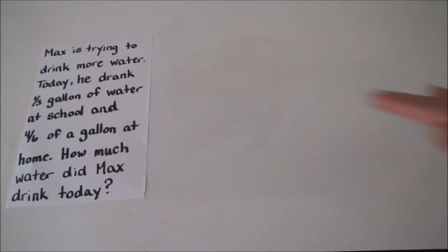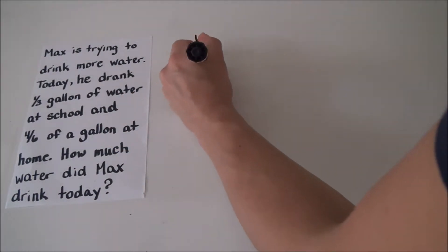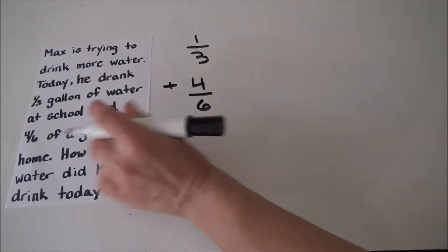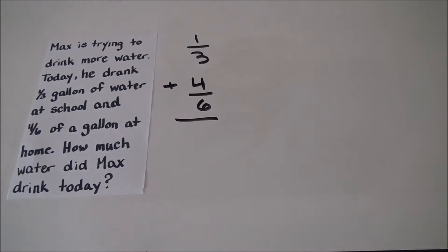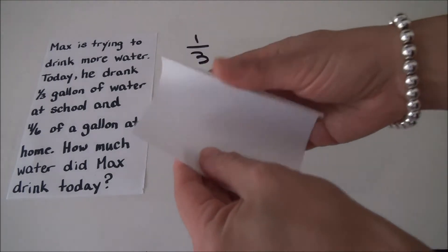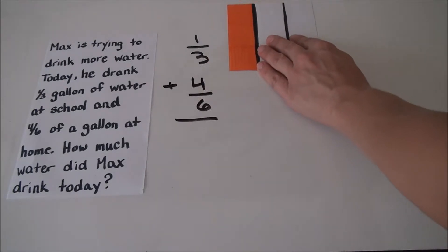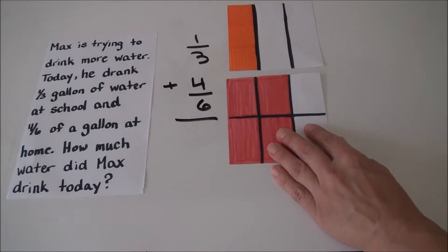This problem calls for us to add one-third plus four-sixths. To represent this problem, we could use paper folding. Here is my one-third. Here is my four-sixths.